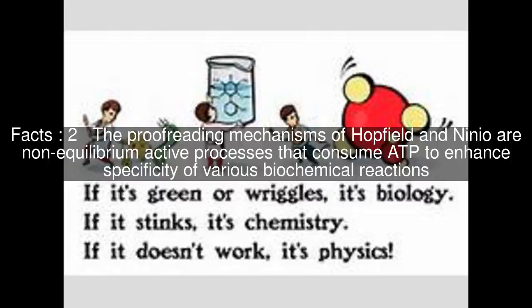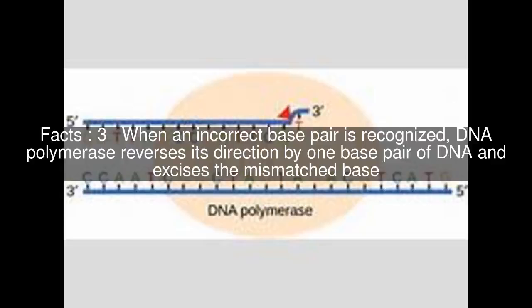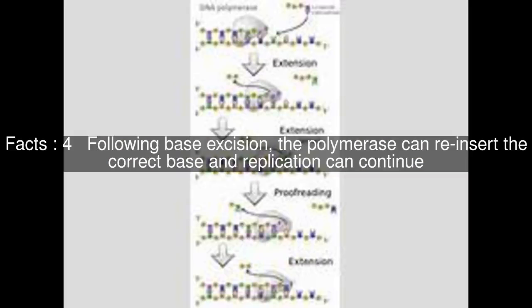The proofreading mechanisms of Hopfield and Nynio are non-equilibrium active processes that consume ATP to enhance specificity of various biochemical reactions. When an incorrect base pair is recognized, DNA polymerase reverses its direction by one base pair of DNA and excises the mismatched base. Following base excision, the polymerase can reinsert the correct base and replication can continue.